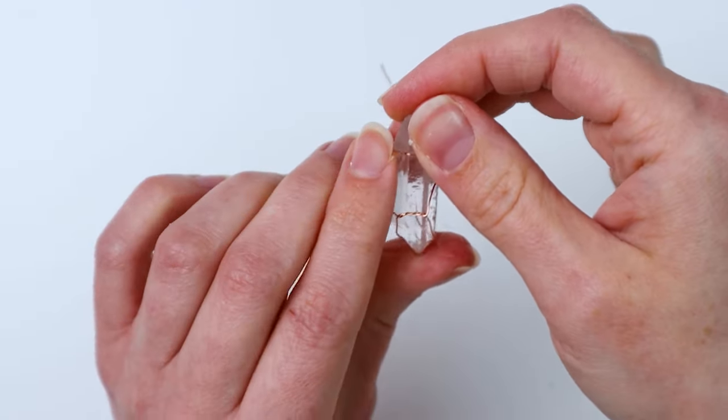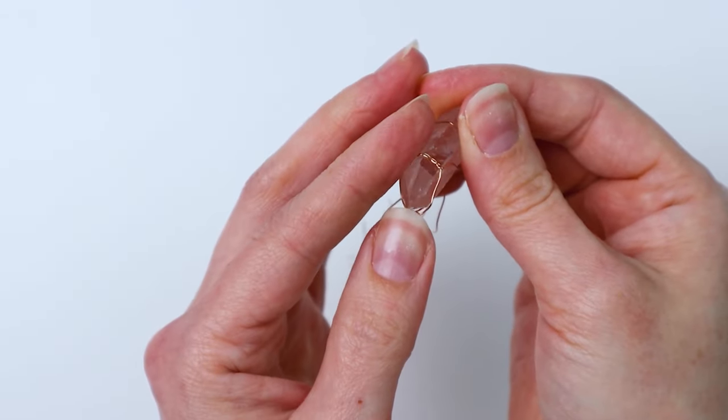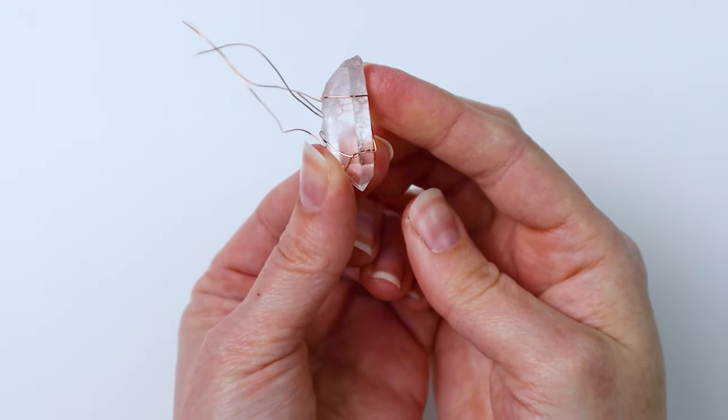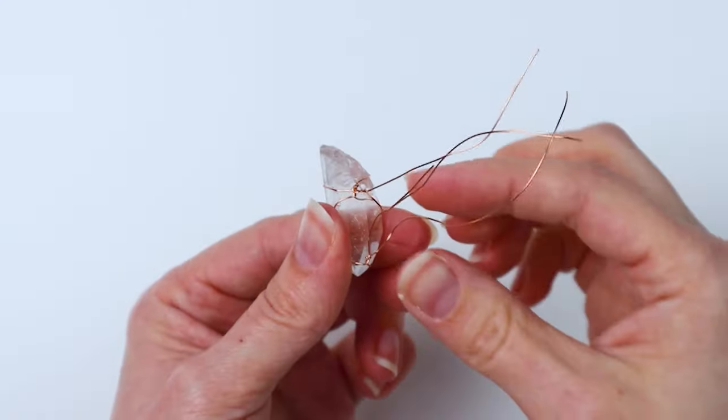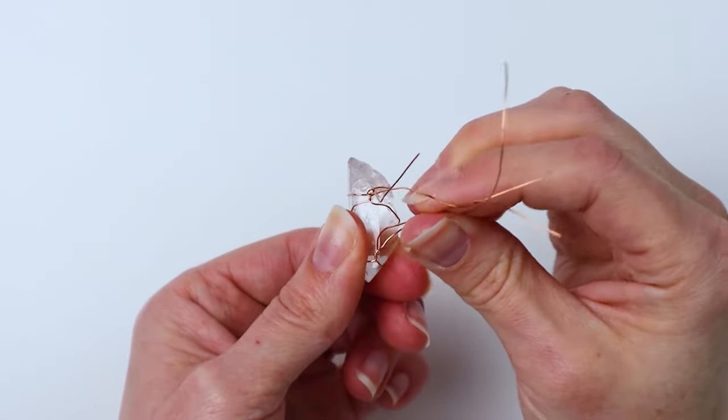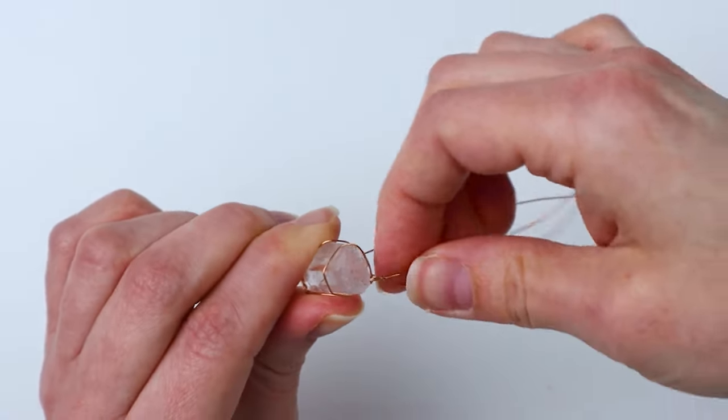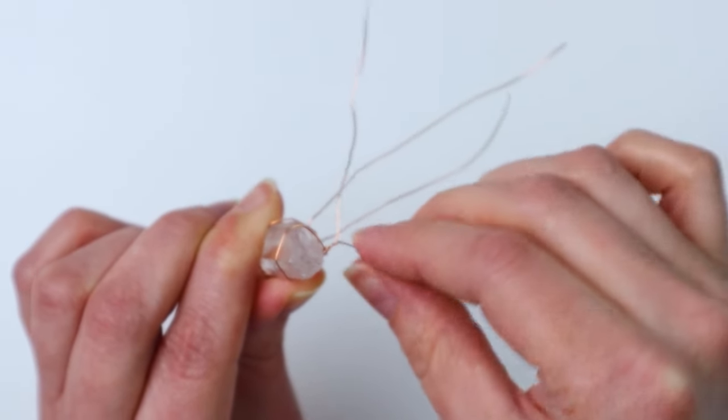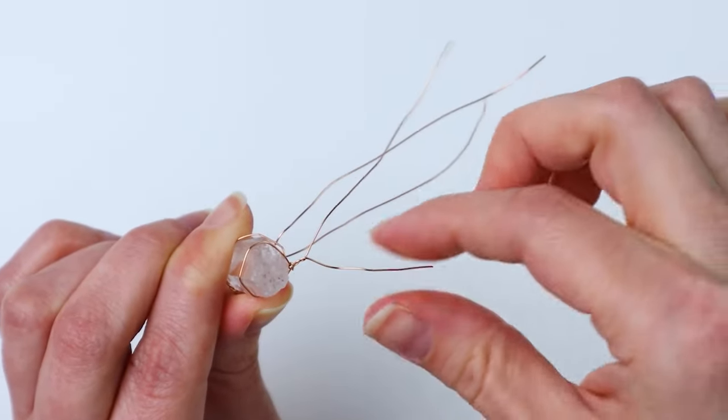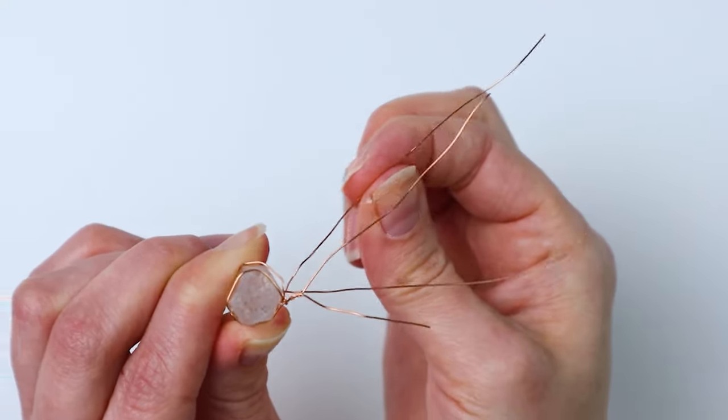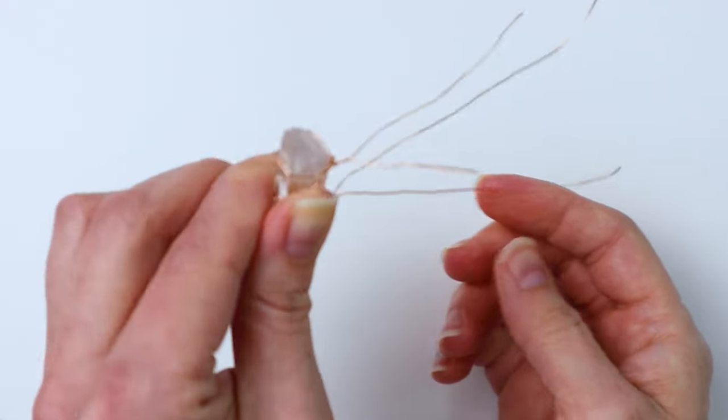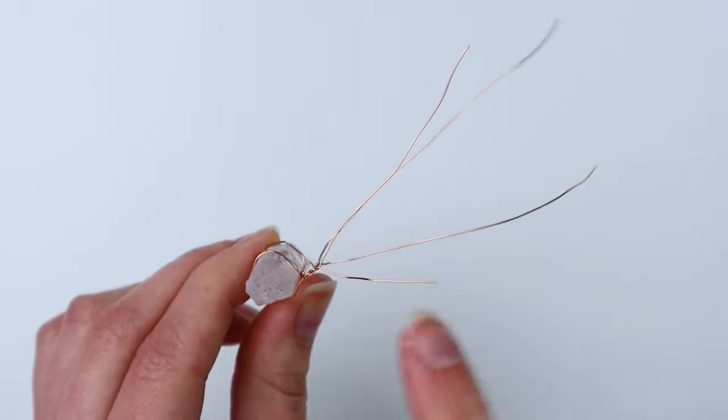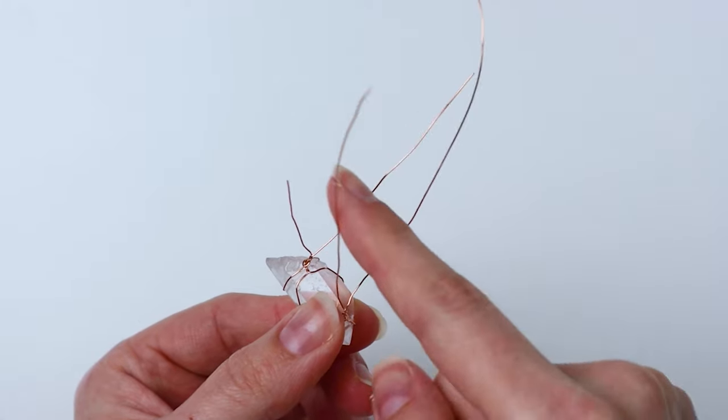Here we go and that will hold it in place a lot better and it will look better once we get it attached to our macrame piece. It'll all kind of hold together better but we just want to make sure that it is pretty secure and isn't going to fall out later. Then we're just going to kind of open up the pieces of wire a little bit get them straightened out so it's easier to attach to our macrame piece and in this case it's going to be a plant hanger and then I will show you how to do that.